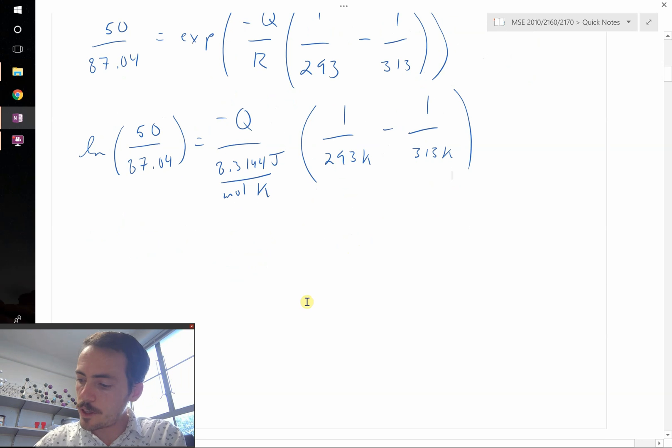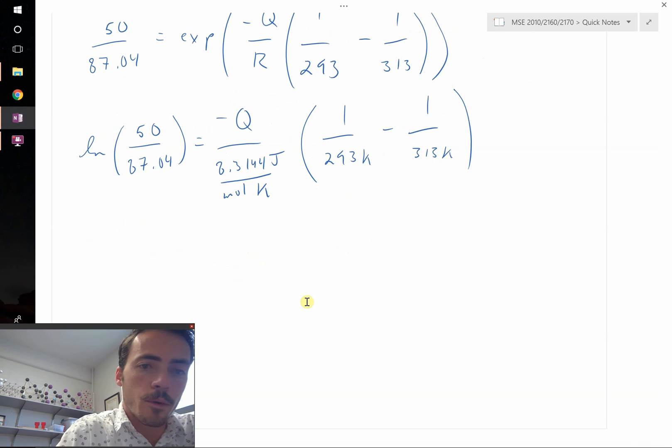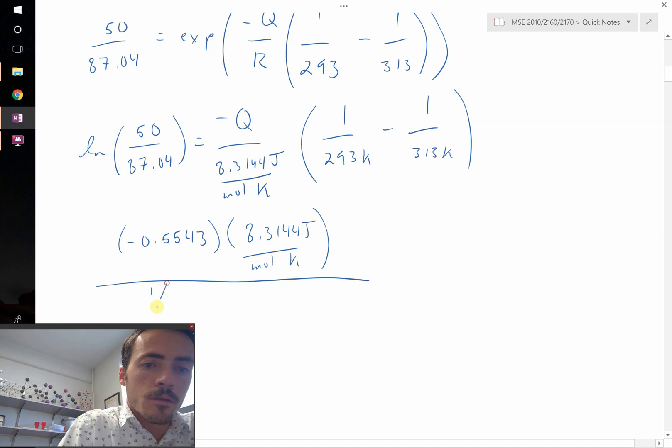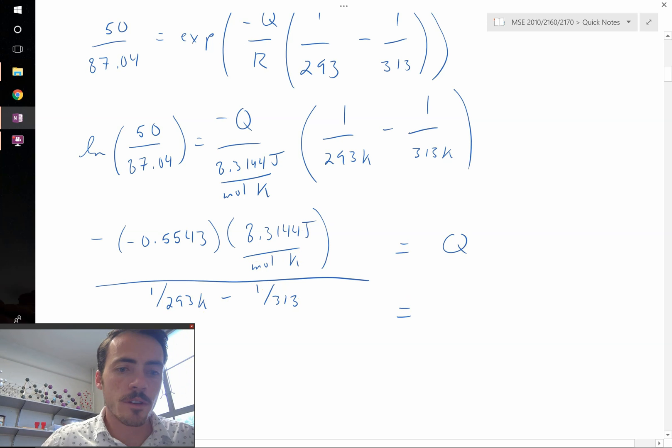We go ahead and figure out what the natural log of 50 over 87.04 is, and we find that it is equal to negative 0.5543, which we can multiply by the gas constant. And then we divide this all by 1 over 293 Kelvin minus 1 over 313 Kelvin, make this all negative to get rid of the negative Q, and that equals Q. Let's punch those values in.